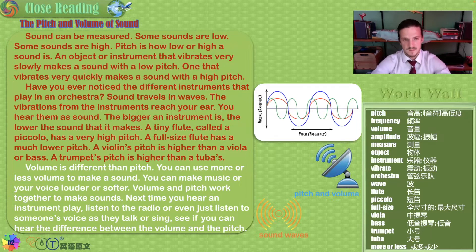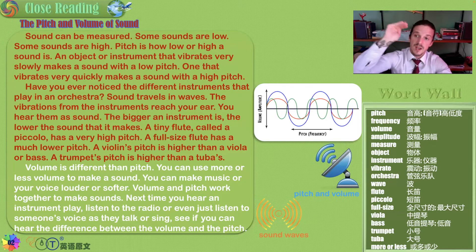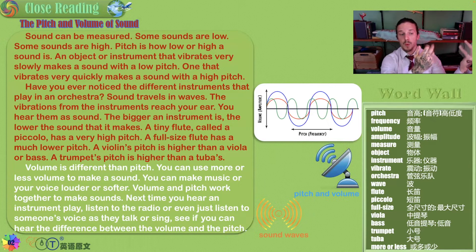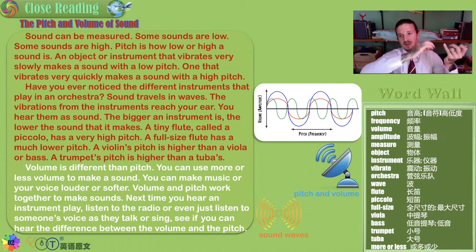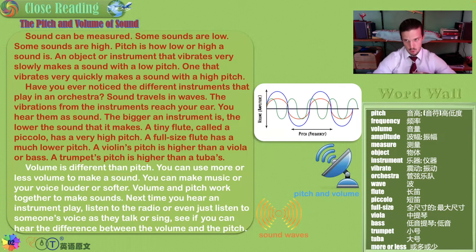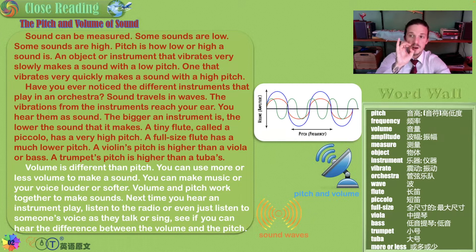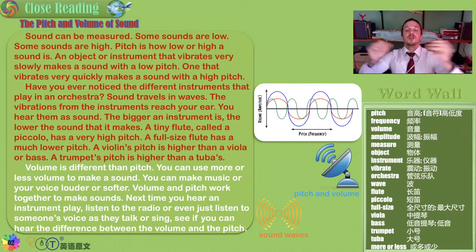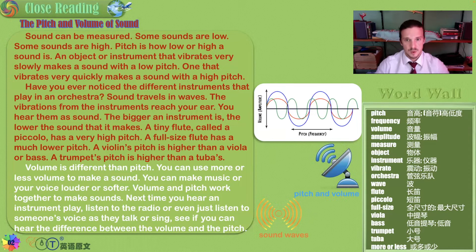A tiny flute called a piccolo has a very high pitch. A full-sized flute has a much lower pitch. A violin's pitch is higher than a viola or a bass. A trumpet's pitch is higher than a tuba. The bigger the instrument, the slower and lower the waves and sounds will be.